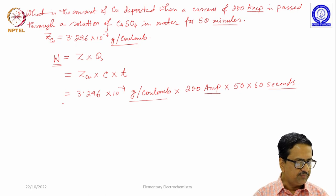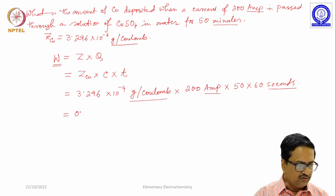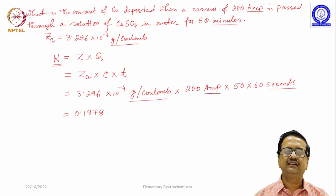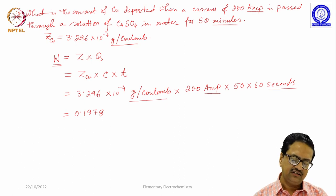Now, when you do this simple multiplication, you end up with a number 0.1978. The question is whether it is gram, kilogram, milligram, centigram, what is it?